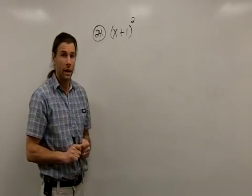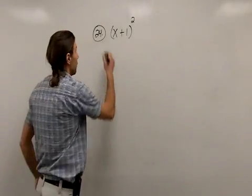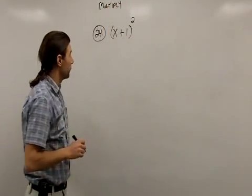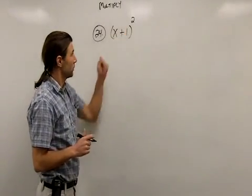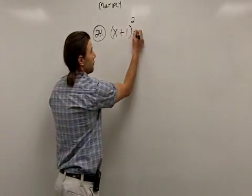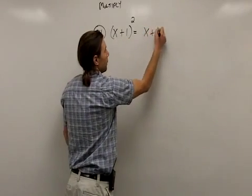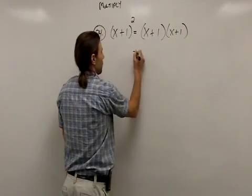The next problem we'll take a look at is problem number 24. And in problem number 24, we're asked to multiply. In fact we're multiplying binomials. Well the problem I've been given is (x + 1)². What that indicates to me is that I need to take the base, x + 1, and multiply it by itself.